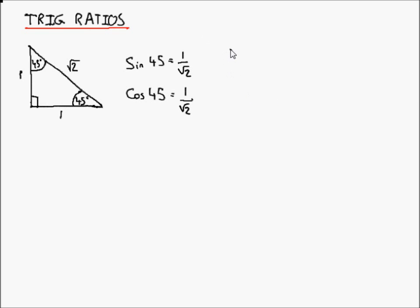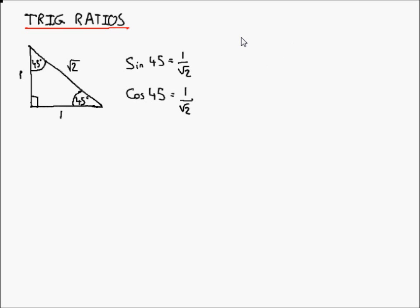This is because the sine and cosine curves intersect at 45 degrees. The cosine curve goes like that, and the sine curve goes through zero like that — a dodgy drawing, but that's where the two curves intersect.